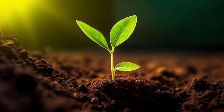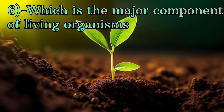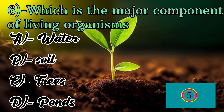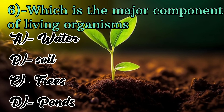Question number six: which is the major component of living organisms? Option A is water, option B is soil, option C is trees, and option D is ponds. The correct answer is option C — trees.